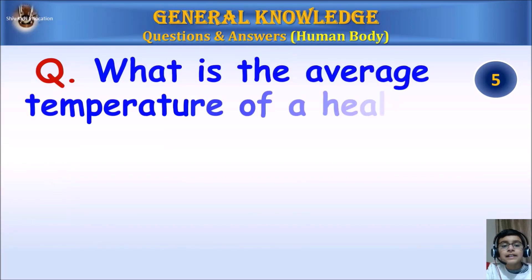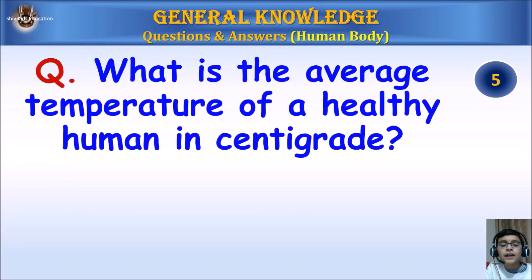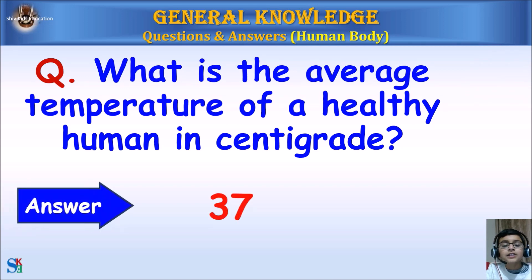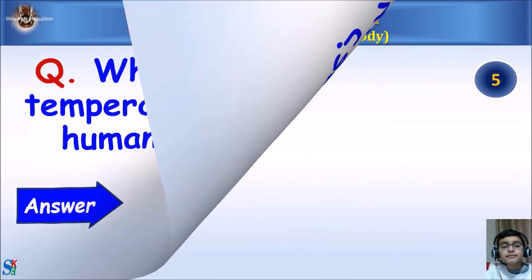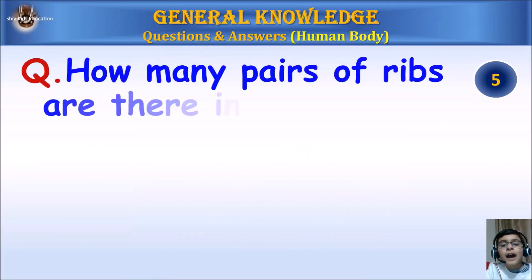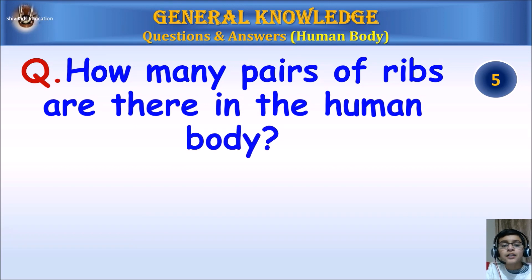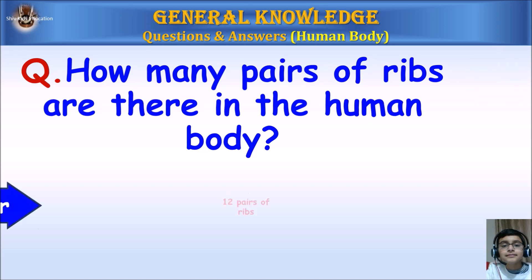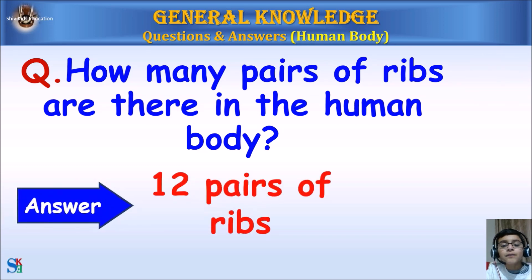What is the average temperature of a healthy human in centigrade? Answer: 37 degrees. How many pairs of ribs are there in the human body? Answer: 12 pairs of ribs.